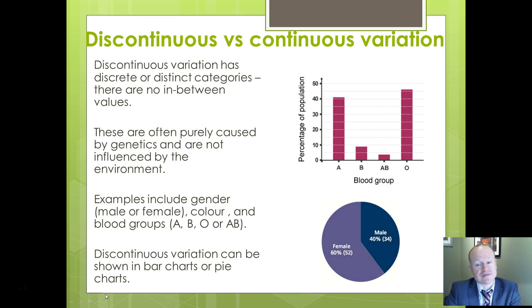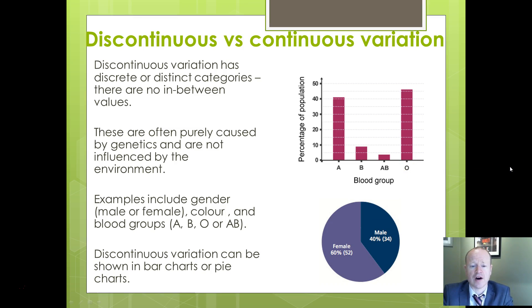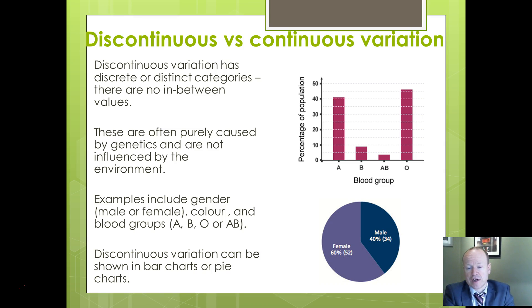Discontinuous variation is variation where there are discrete, distinct, absolute yes-or-no categories — it's either this or it's that — and it's usually genetic and not influenced by the environment. Examples include male and female sex, flower colour (red or white), and blood groups (A, B, AB, O). These are usually shown as a bar chart or pie chart. Notice that in a bar chart, there are gaps between each of the bars, and you have category names rather than numerical data.